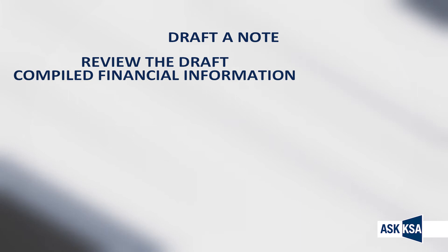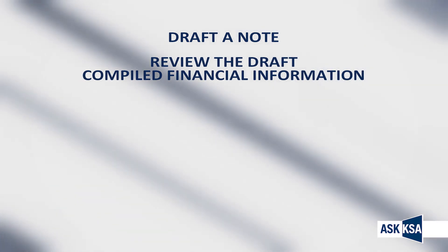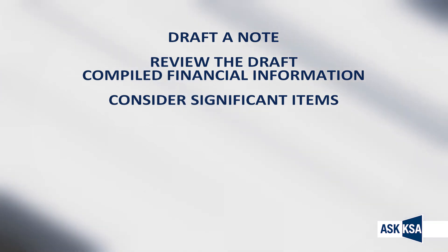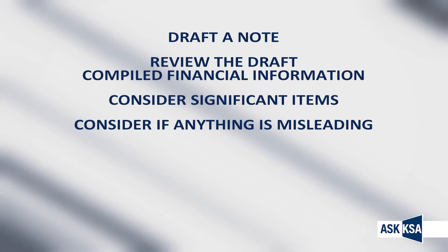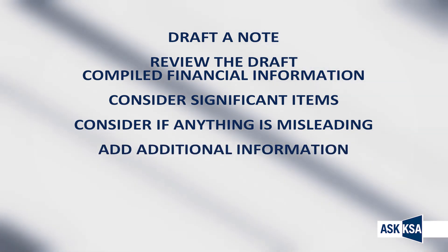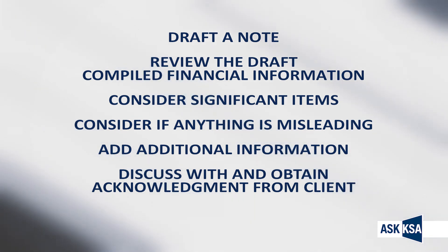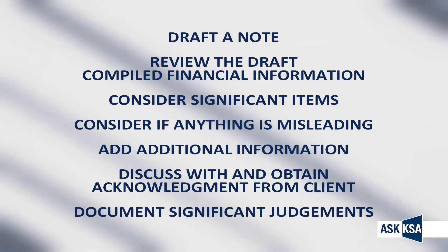While the concept of including a written note in the financial information is new, the concept of preparing it is not. You have always prepared the financial information in accordance with the basis of accounting — the only difference is you write it down. Establish a process to ensure you don't miss anything important. Draft the note, then review the compiled information in light of the basis of accounting note. Consider significant items and whether all have been included. Stand back to consider if anything causes the compiled financial information to be misleading, and add additional basis if needed. Discuss the compiled information with your client and obtain their acknowledgment on the selection of the basis of accounting. Document significant judgments. The standard does not preclude you from including other notes — if you included a note last year, include it again.